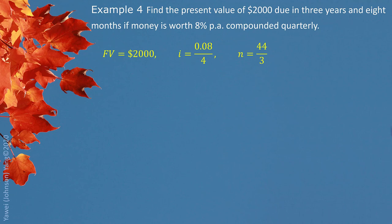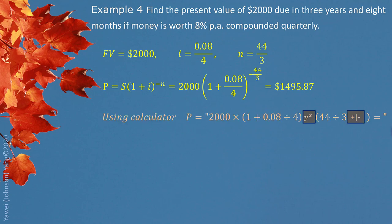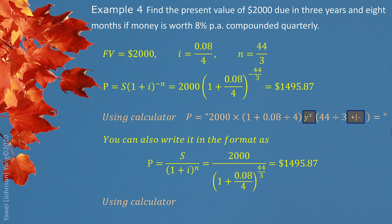We simply plug the fraction into the formula — negative 44 over 3 is our exponent. The answer is $1,495.87. Using the calculator, we can get the answer in one step by typing all the information together exactly as the format shows on screen. You can also manage this calculation in Excel very conveniently. Whenever you have an operation or negative sign in the exponent, you must use brackets to hold the exponent.